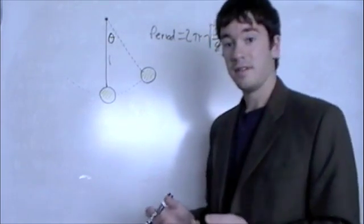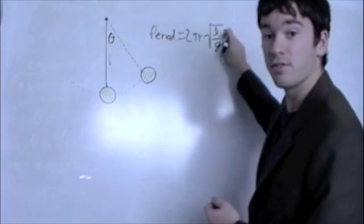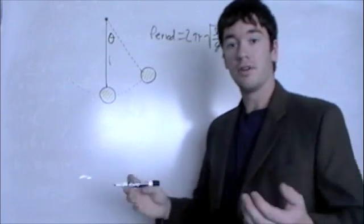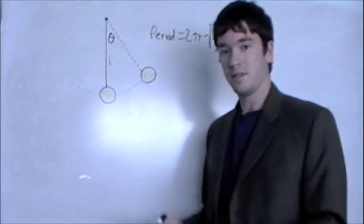So what could change the period? Well, we've got length of the string and gravity in here. So a pendulum would have a different period on Mars than it would on Earth, or on the moon than it would on Earth.